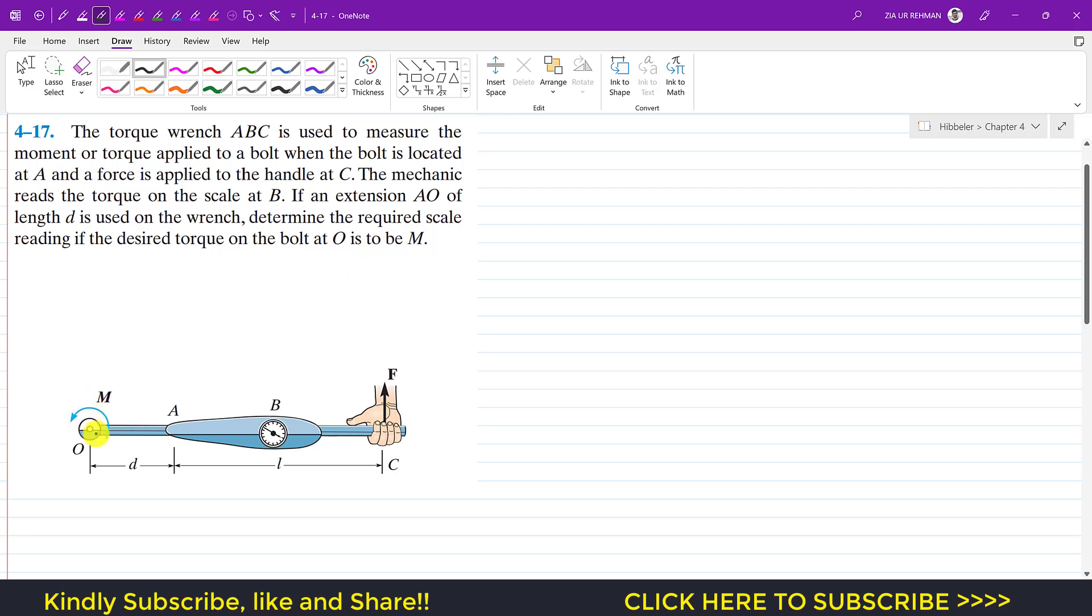So at the bolt, the moment is capital M, and the scale reads, let's say, the scale reading is M_S as the moment on the scale. The moment on the scale is read from the location of point A.